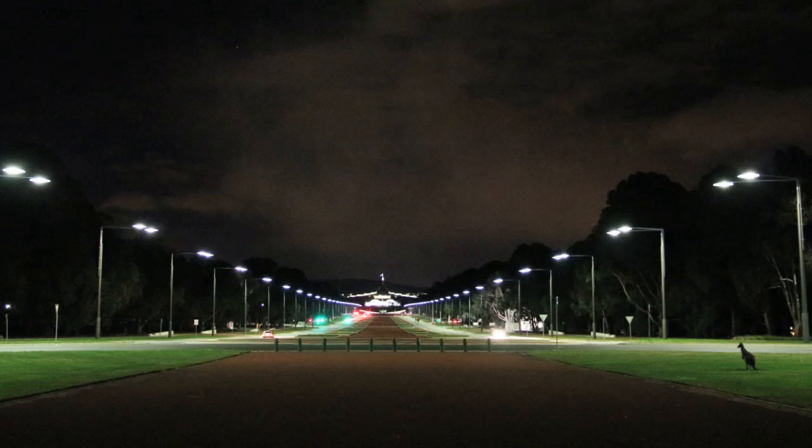where we look down Anzac Parade. And what do we see? Well, we see a kangaroo, but we also see a bunch of lights. And these lights are at further and further distances from the camera. So one could imagine in this image, measuring how bright these lights appear as a function of distance.